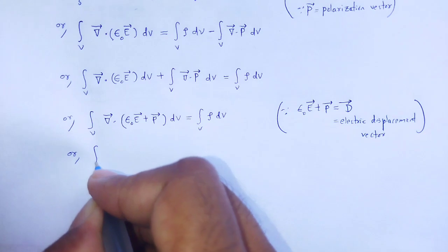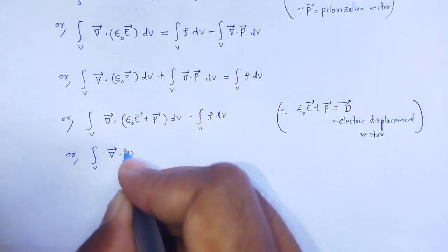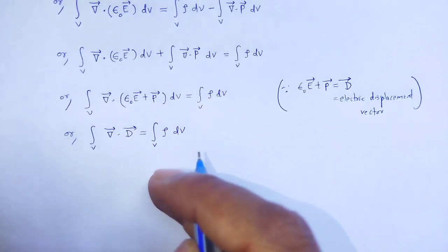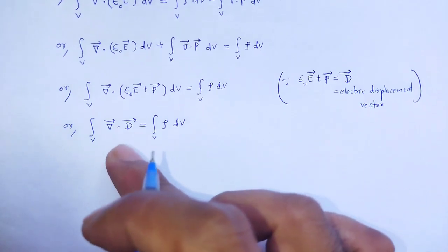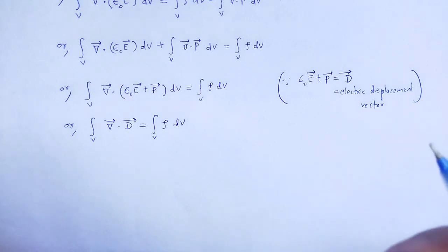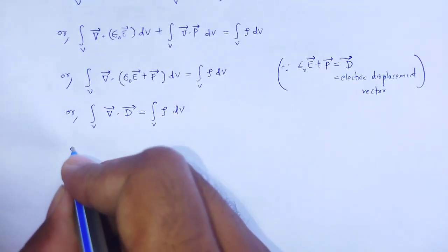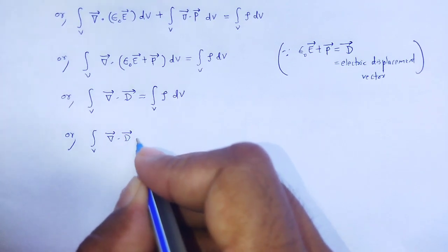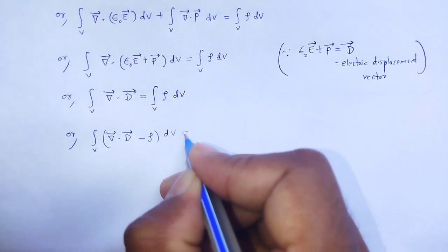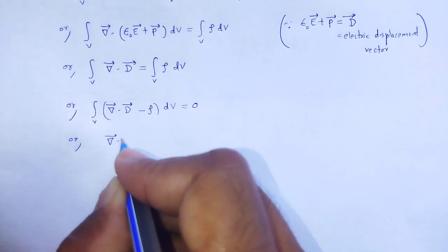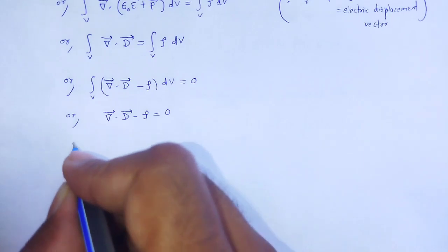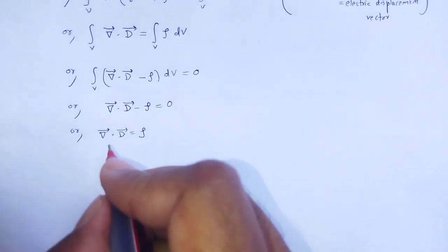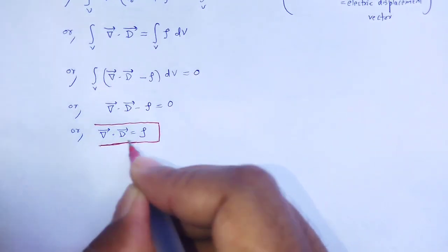The term epsilon naught E plus P is the electric displacement vector D. Therefore, the volume integral of grad dot D equals the volume integral of rho dV. Since the equation is true for all volumes, the integrand on both sides must be equal, giving grad dot D minus rho equals 0, or grad dot D equals rho. This is Maxwell's first equation in differential form.